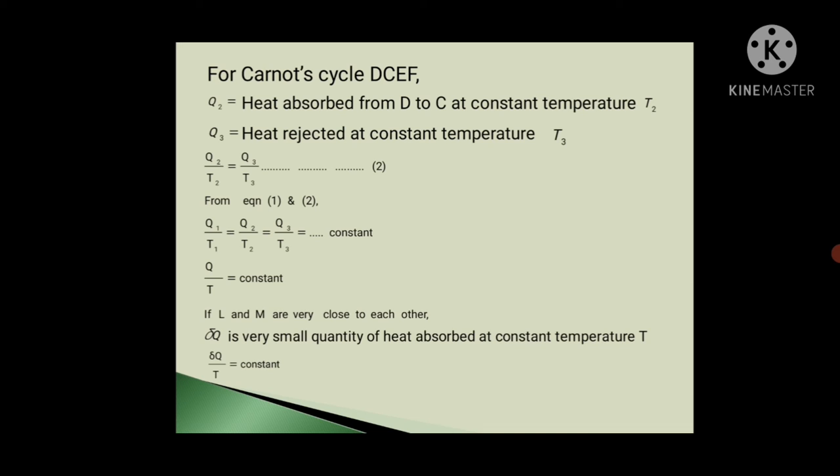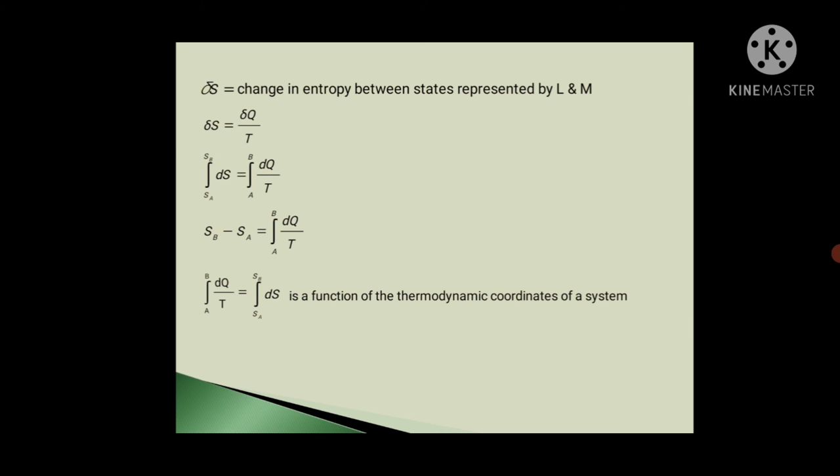So if L and M, two adiabatics, are very close to each other, then take DEL Q as a very small quantity of heat at constant temperature T. Then we can write DEL Q upon T equals constant. And DEL S is change in entropy between states represented by L and M. S means entropy, DELTA S is change in entropy.